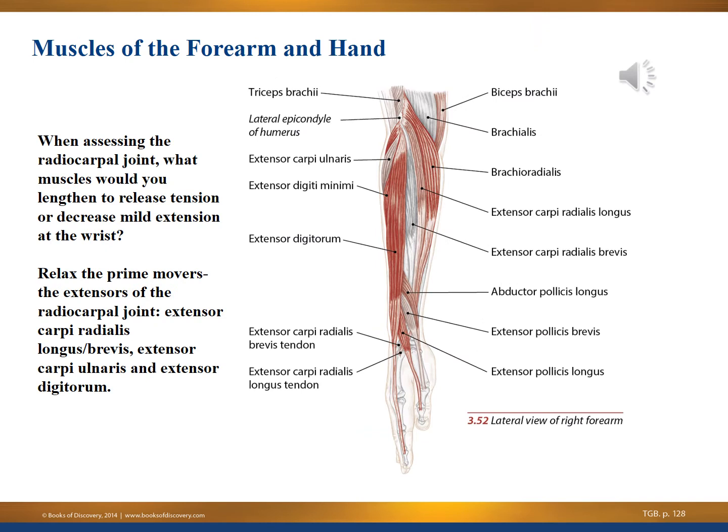In the lateral view of the right forearm and hand, when assessing the radiocarpal joint, to release tension or decrease mild extension at the wrist, you would relax the prime movers — the extensors of the radiocarpal joint. The radiocarpal joint is between the radius and the carpals. The extensors to release include: extensor carpi radialis, extensor longus and brevis, extensor carpi ulnaris, and extensor digitorum — a great technique especially if your client is a massage therapist.